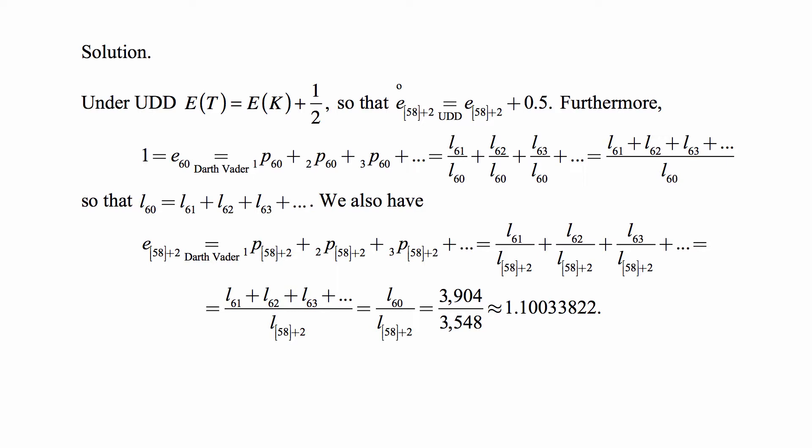It's the same type of ratio of all the sizes of population L₆₁ + L₆₂ and so on into the future divided by L₍₅₈₎₊₂. But that sum in the numerator has to be equal to L₆₀. So this has to be equal to L₆₀/L₍₅₈₎₊₂.